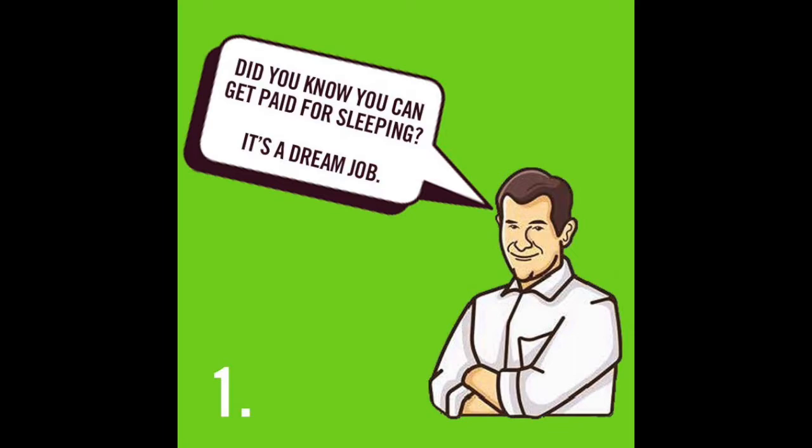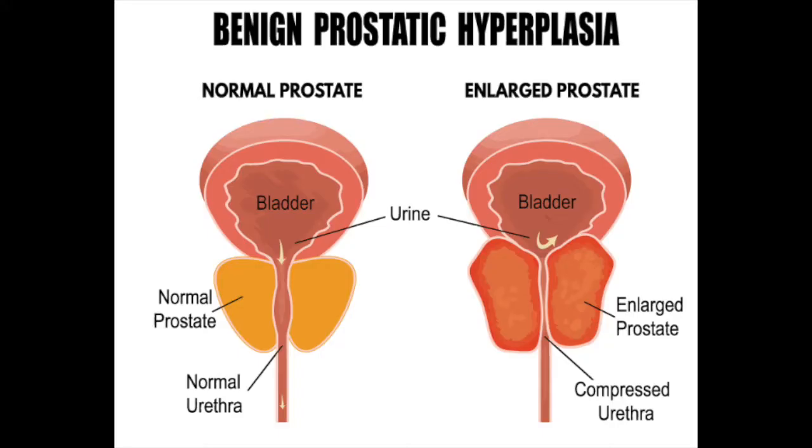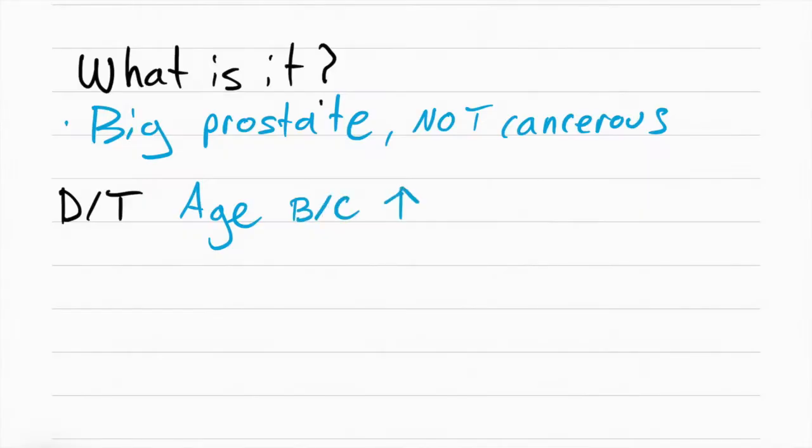Benign prostatic hyperplasia is a large prostate. This happens to men as they age and it's a normal process. This happens because of the DHT levels. DHT stands for dihydrotestosterone and it increases with age. What DHT does is help make more prostate, it helps make the prostate bigger. So as the man ages, DHT levels go up and so does the prostate size.